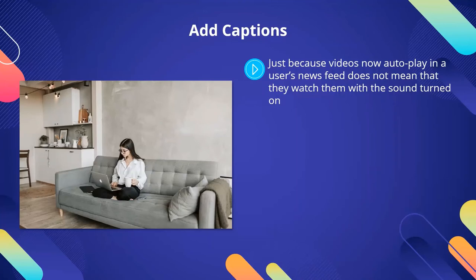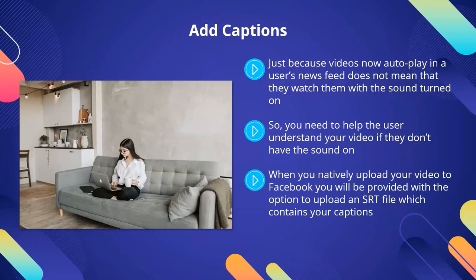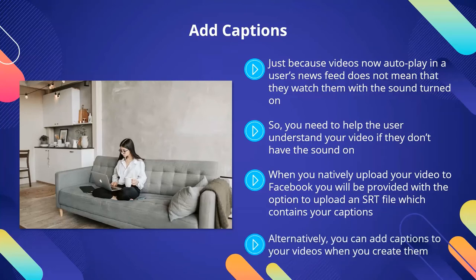You will never know if a user has watched your video with sound or not, so you need to help the user understand your video if they don't have the sound on. If you don't do this, then you will lose them very fast. The most effective way to do this is to use captions with your videos. When you natively upload your video to Facebook, you will be provided with the option to upload an SRT file which contains your captions. You can also take advantage of the auto-captioning feature which is now working in Facebook. Alternatively, you can add captions to your videos when you create them, using InVideo or Animoto, for example. The advantage of using these video editing programs is that you can change font size and color to really make your captions stand out and engage your audience.